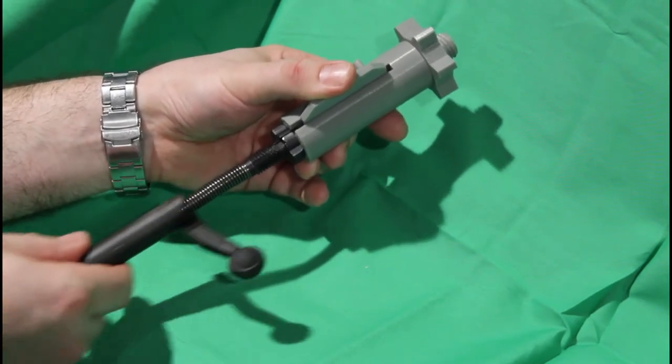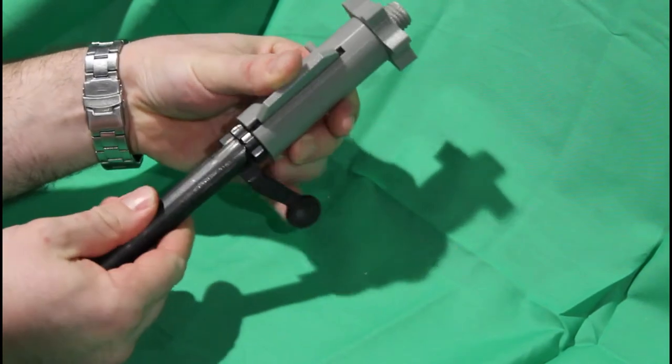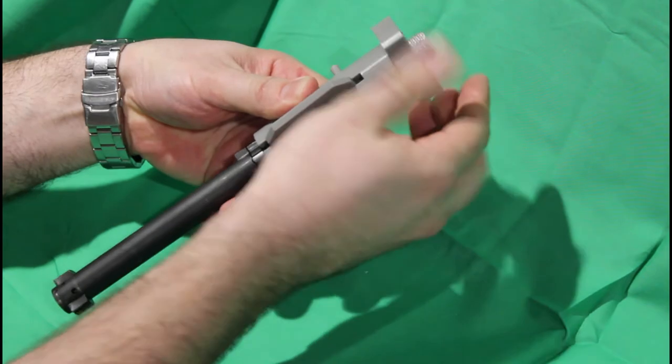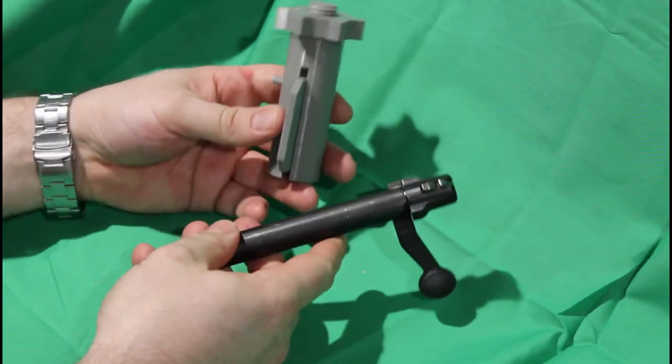And then reassembly, you just put it back together, line the divot up with the pin, and back the screw off, which will let that seat back in there. Easy as that.